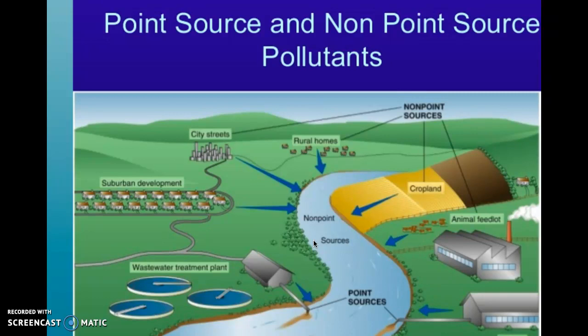With point source pollution, some examples are wastewater treatment plants, factories, oil spills, and toxic waste spills. We can say the wastewater treatment plant released a thousand gallons of polluted water and put that responsibility on them. It's something we can easily control, unlike nonpoint source pollution.